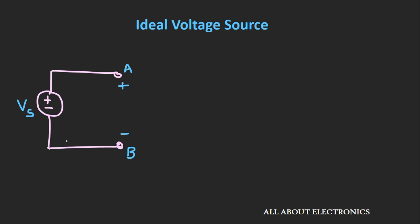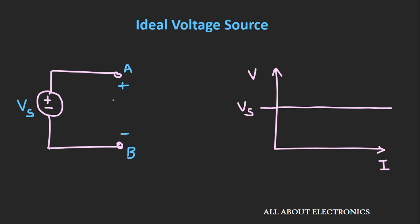In any ideal voltage source, the voltage across its two terminals remains the same — no matter what amount of current you draw through this voltage source. If we look at the VI characteristic, the voltage across its two terminals will remain constant, irrespective of the current drawn through this voltage source.